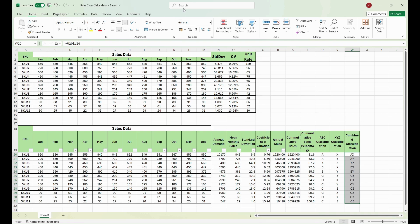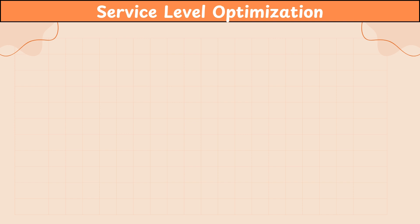We have provided this Excel file in the description for your reference. Moving to the third part of our video: how to use the ABC XYZ classification to decide the optimum service level for each product category.